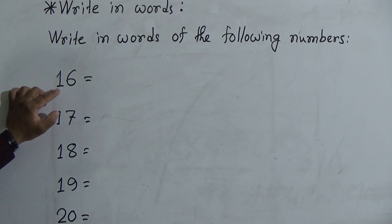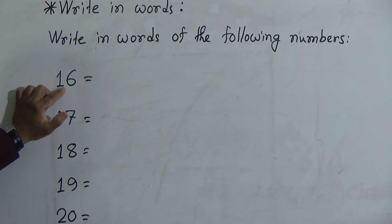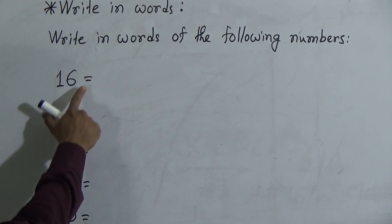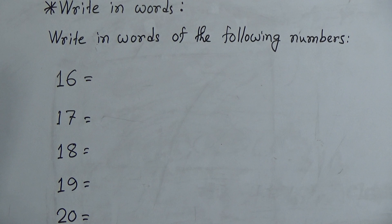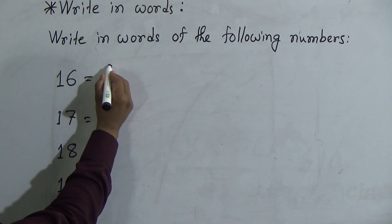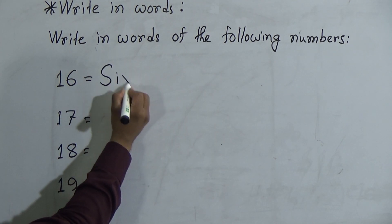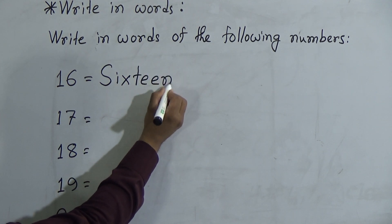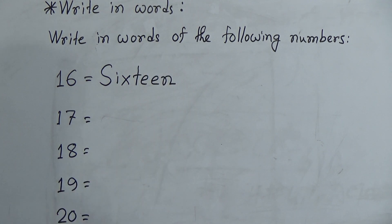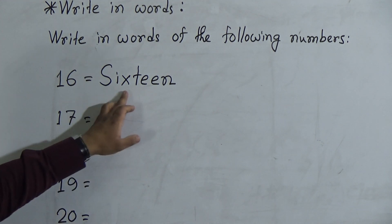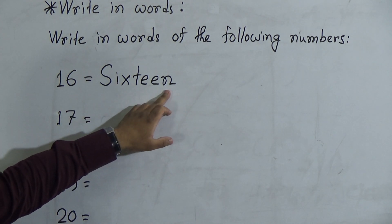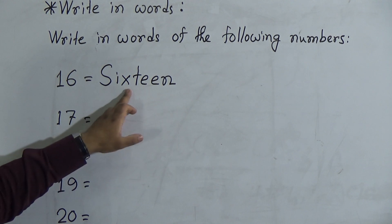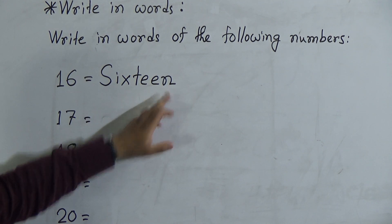The first number is 1 and 6, that means it makes the number 16. You should give the equal sign, then write down the spelling of 16. The spelling of 16 is S-I-X-T-E-E-N. Or you can say S-I-X-T-E-E-N, 16.